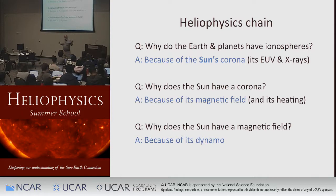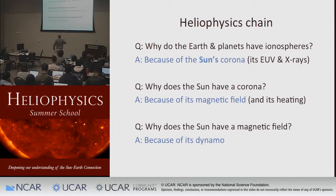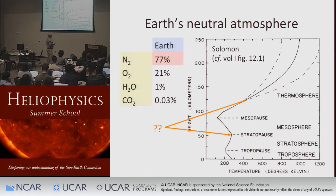You'd say, well, why does the sun have a corona? We already heard a lecture on that. It has a corona because it has a magnetic field, and then you ask why does the sun have a magnetic field, and we all know about the sun's dynamo. So we'll just finish up by saying, well, so what if it has a corona, so what if it has EUV and x-rays — what does that do to create an ionosphere?